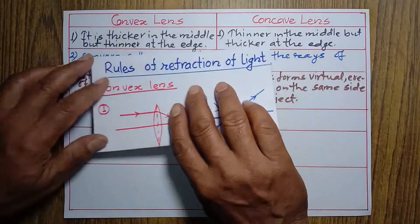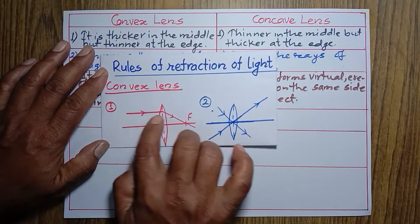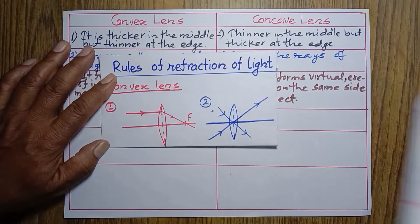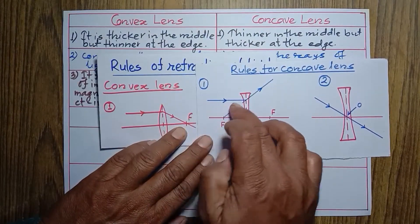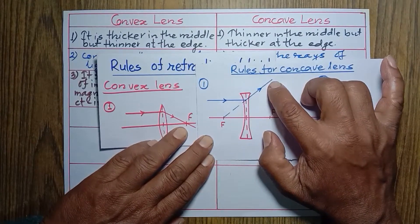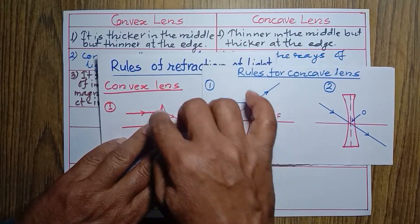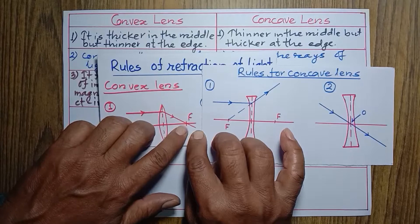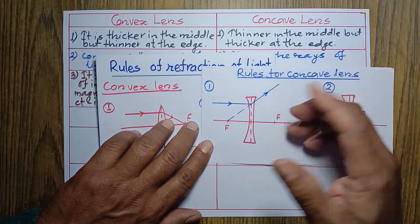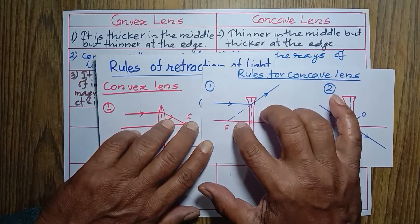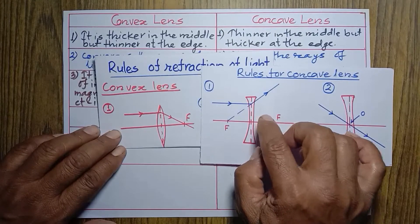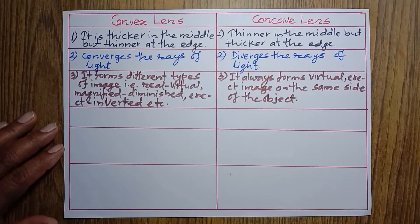In the case of a convex lens, when a ray of light comes parallel to the principal axis, it actually passes through the focus — so the focus is called a real focus. But in the case of a concave lens, when a ray of light comes parallel to the principal axis, it never passes through the focus; it only appears to be coming from the focus. That's why the focus of a concave lens is called virtual. So: convex lens — its principal focus is real; concave lens — its principal focus is virtual.